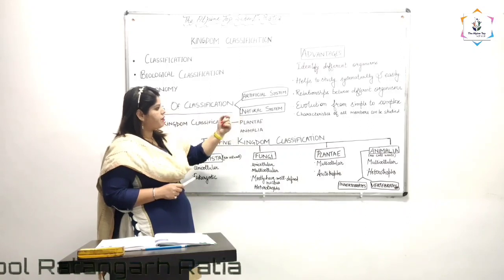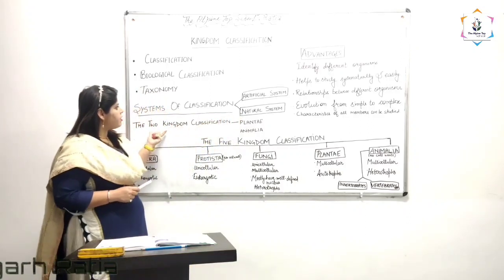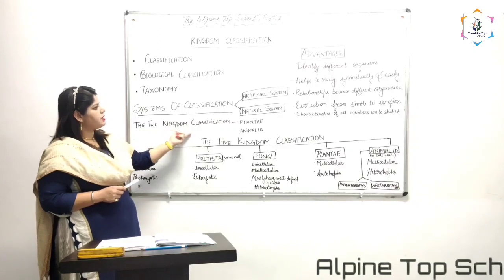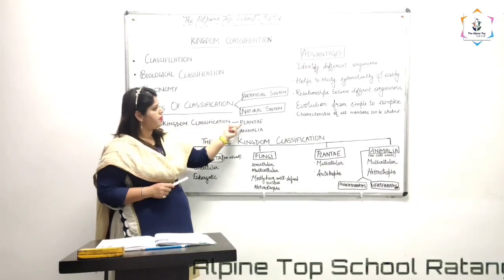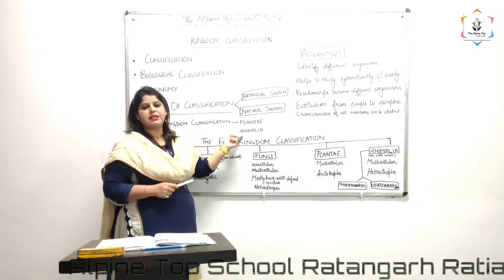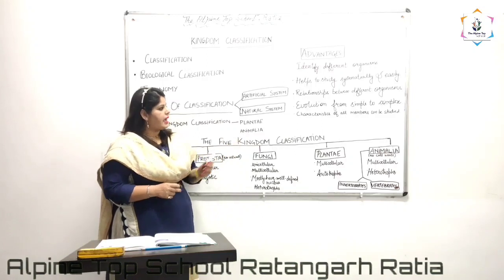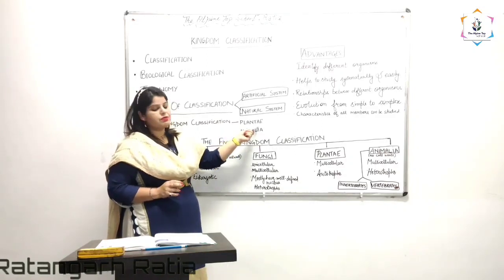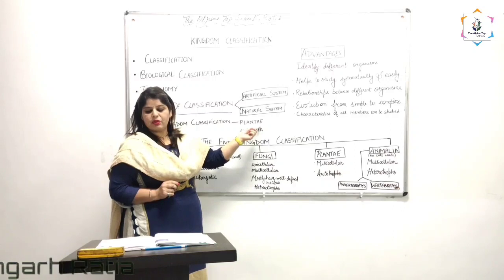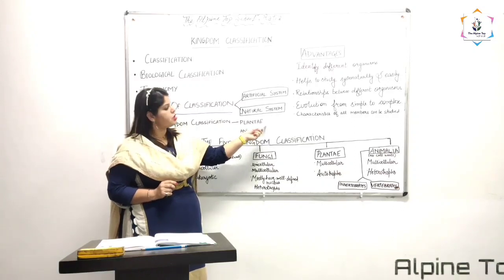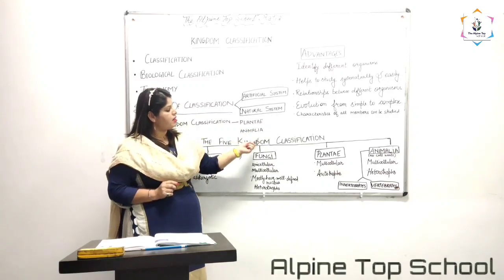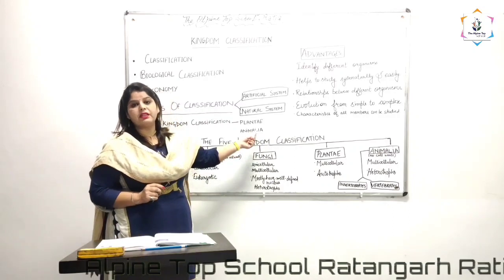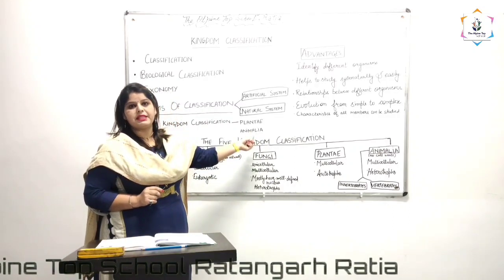Afterwards, Carolus Linnaeus proposed the two kingdom classification, based on Plantae and Animalia. As the name indicates, Plantae includes organisms which can prepare their own food but cannot move. Animalia includes organisms which can move but are not able to prepare their food by themselves.